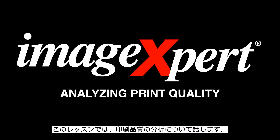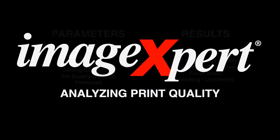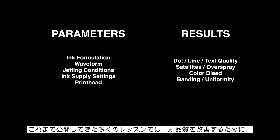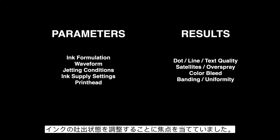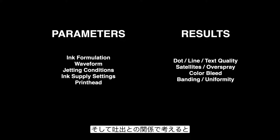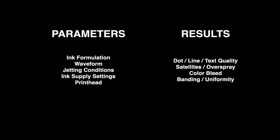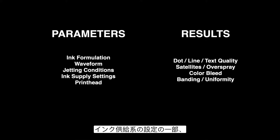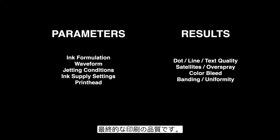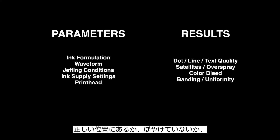In this presentation we're going to talk about analyzing print quality. A lot of the content we've put out until this point has focused on improving the jetting to make changes to the quality of the print. Some of the parameters we can change are the ink formulation, the waveform, jetting conditions like temperature and humidity, ink supply settings, and the print head itself. The results we're looking for are quality of dots, lines, and text — are they in the right position, focused, crisp, easy to read — as well as satellites and color bleed.